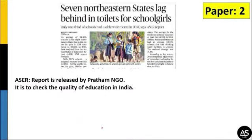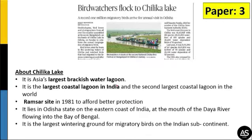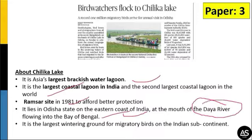You can relate the next article to Paper 2 — seven northeastern states lag behind in providing toilets for girls in schools. The ASER report, released by the Pratham NGO, checks the quality of education in India and has highlighted this lag. The next article relates to Paper 3 and Environment and Ecology — it concerns Chilika Lake. Chilika Lake is Asia's largest brackish water lagoon, the largest coastal lagoon in India, and the second largest in the world. It is a Ramsar site designated in 1981, located in Odisha on the eastern coast at the mouth of the Daya River flowing into the Bay of Bengal, and is the largest wintering ground for migratory birds in the Indian subcontinent.